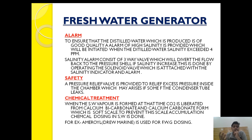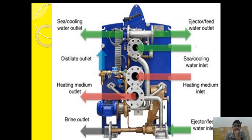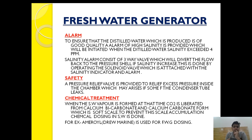What are the safeties provided in the fresh water generator? A pressure relief valve is provided to relieve excess pressure inside the chamber, which may arise if some of the condenser tubes leak. If there is a major leakage, even though the brine ejector is removing excess sea water, the whole chamber may get filled and build up excess pressure. To prevent this, a relief valve is provided on top of the pressure chamber to release excess pressure. That is the safety provided in a fresh water generator.